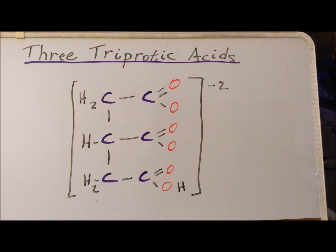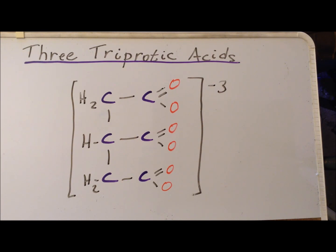If we remove a second acidic hydrogen from citric acid, we get a structure with a minus two charge. Removing the third acidic proton gives a structure with a minus three charge. Citric acid is interesting in the analytical laboratory because if we try to detect each of the deprotonation events by titration, we cannot distinguish them — it looks as if all three acidic protons come off at roughly the same time.